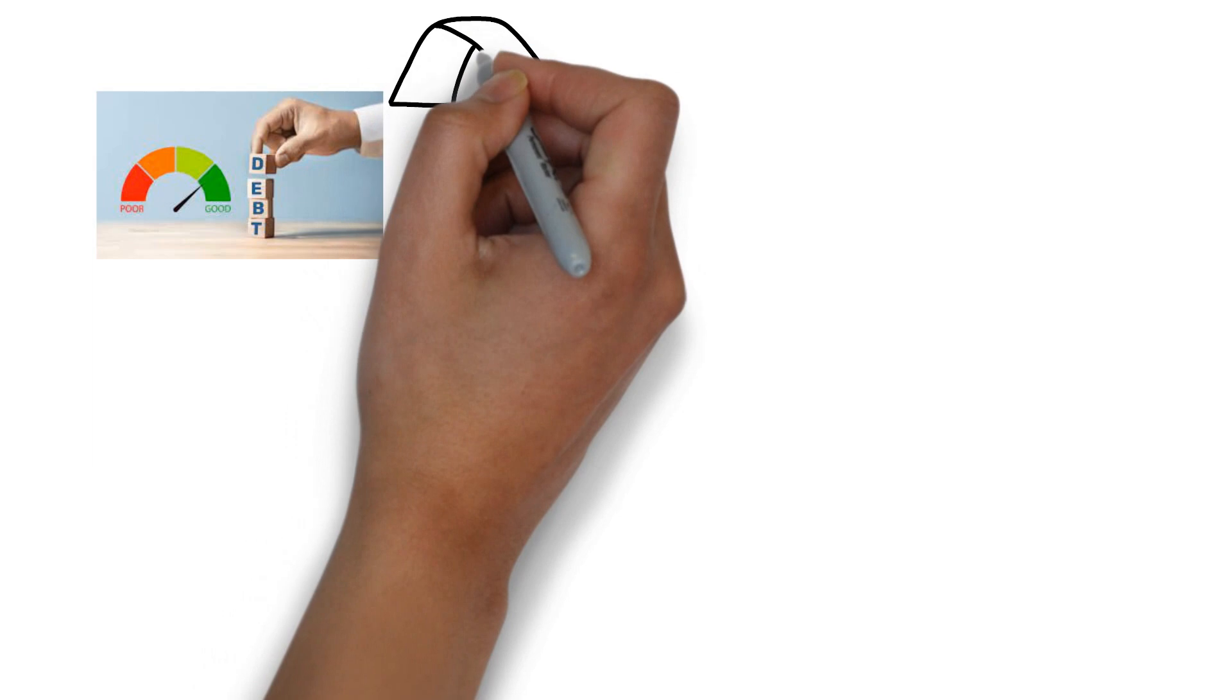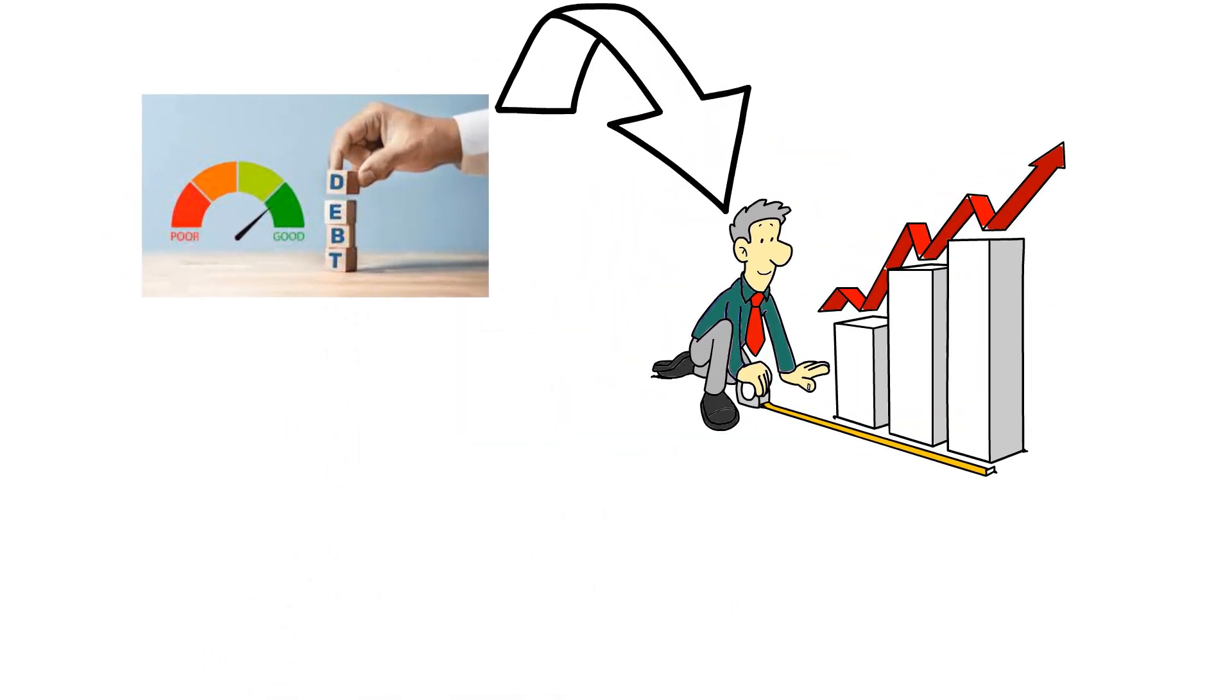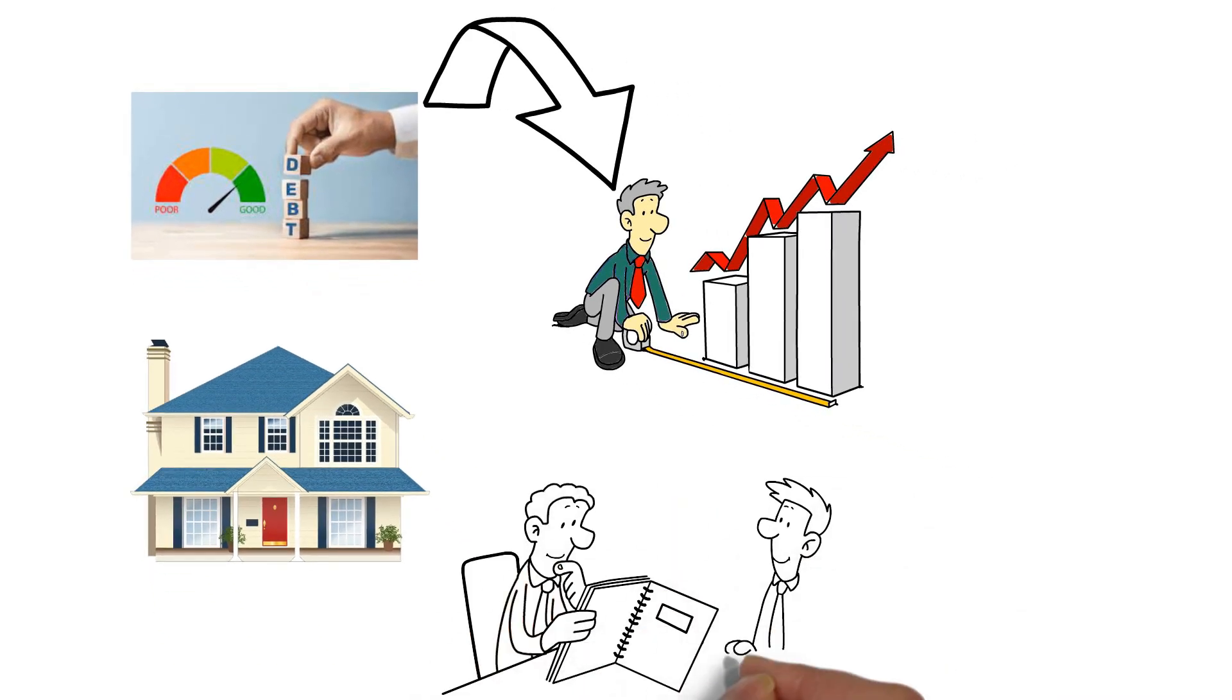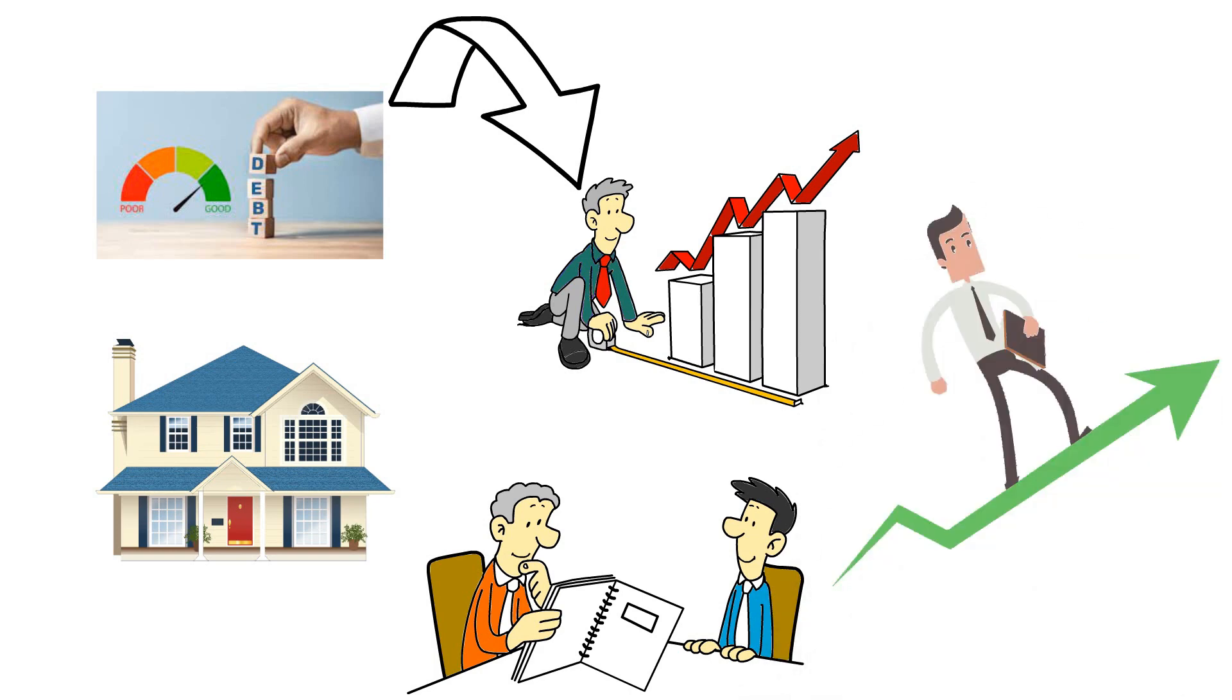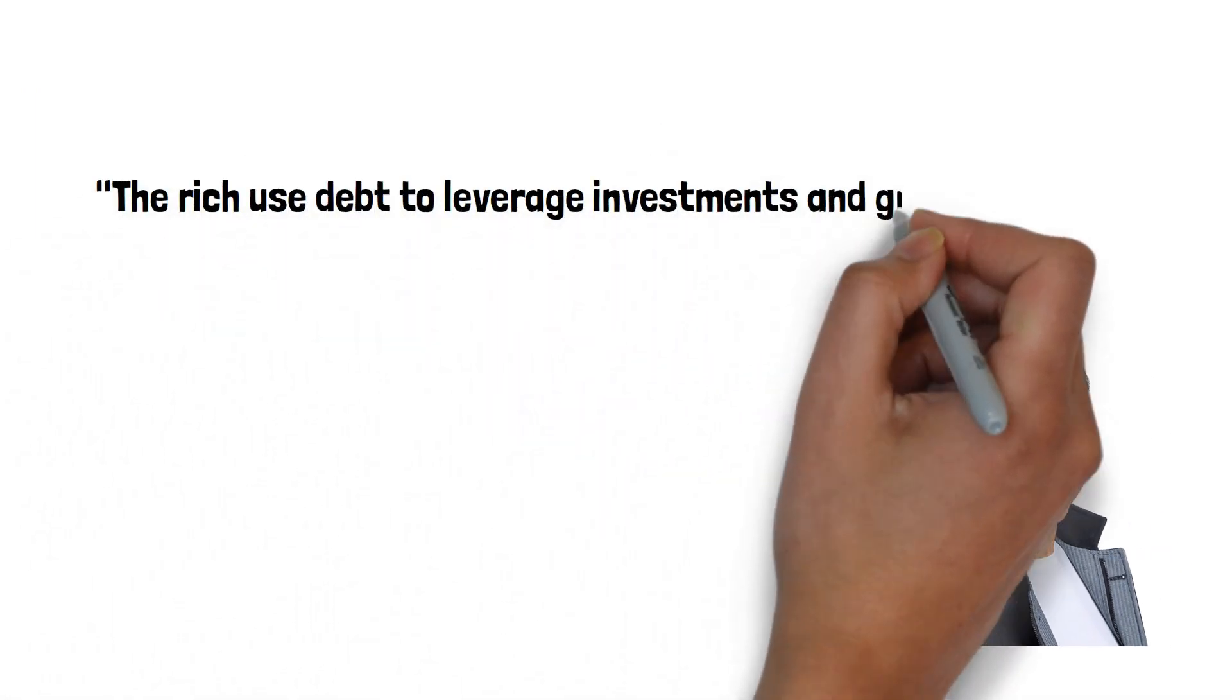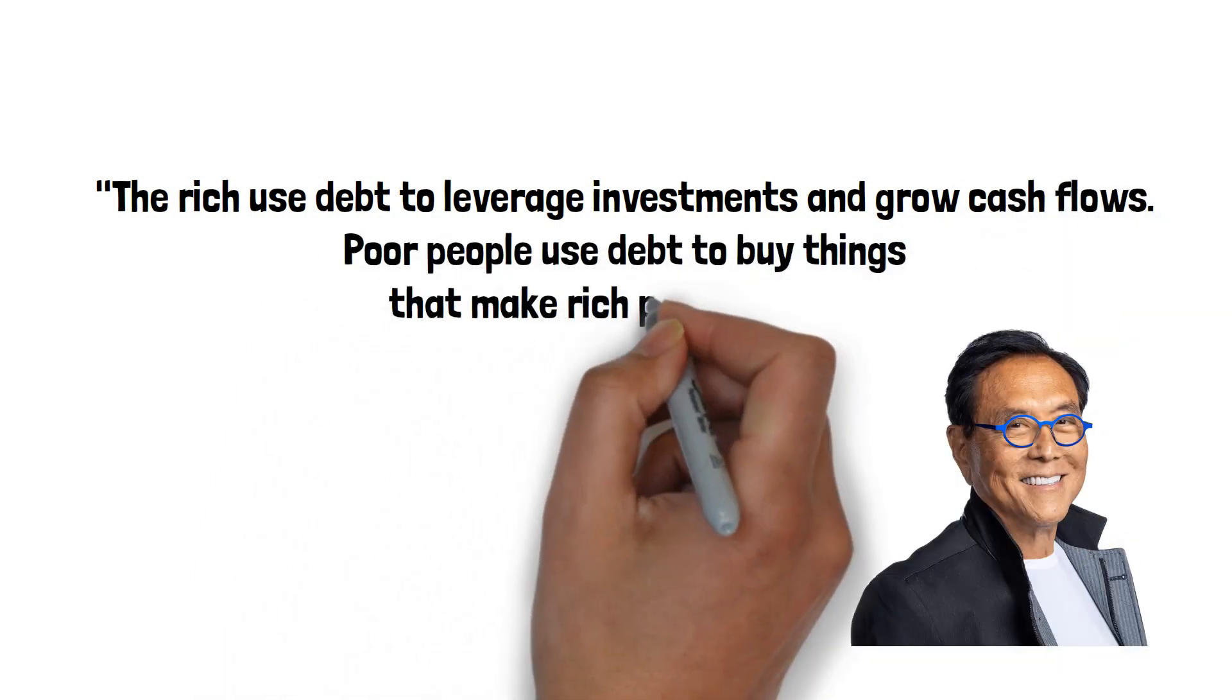Good debt, on the other hand, is an investment that will grow in value or generate long-term income. For example, a mortgage to buy a rental property or a loan to start a business can be considered good debt. These are assets that offer a return on investment over time. As billionaire Robert Kiyosaki says, the rich use debt to leverage investments and grow cash flows. Poor people use debt to buy things that make rich people richer.